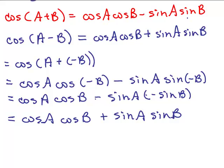So it's cos cos minus sine sine, or cos cos plus sine sine. That's the formula for the cosine of a minus b.